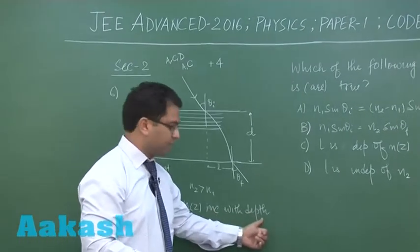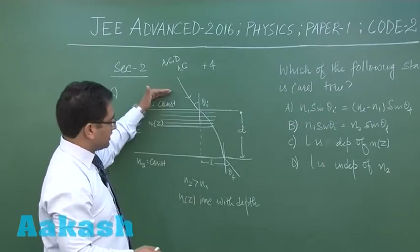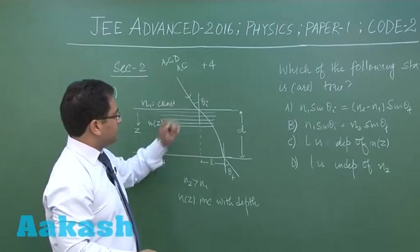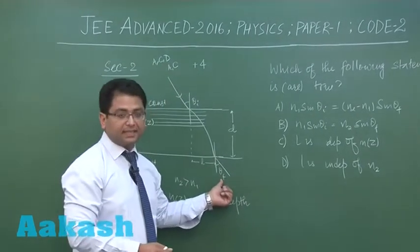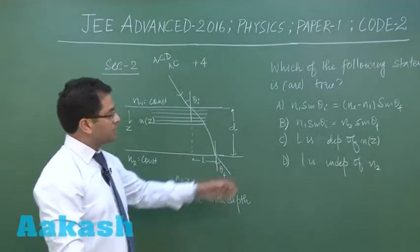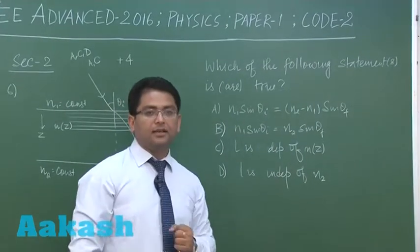And z increases with depth, together n₂ is greater than n₁. Light enters at angle of incidence θᵢ and finally emerges at angle of emergence θf, and there is a lateral displacement of l. Based on this, we need to choose the correct options which are very clear in front of you.